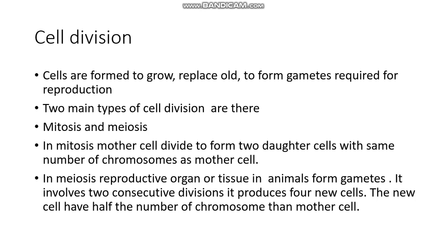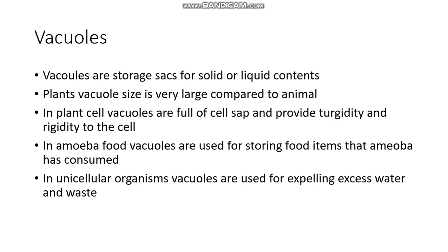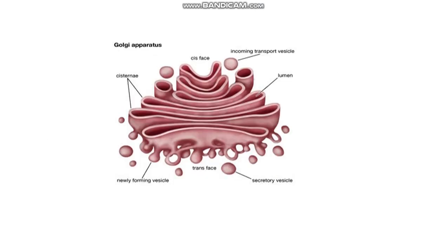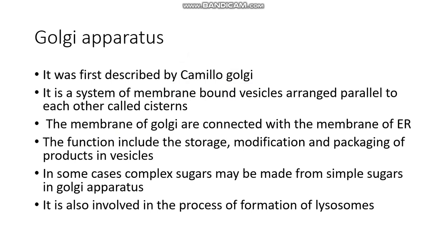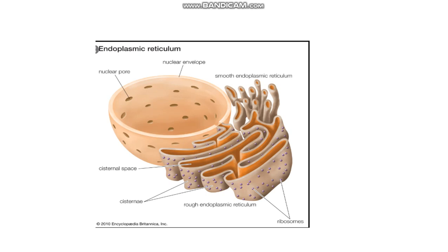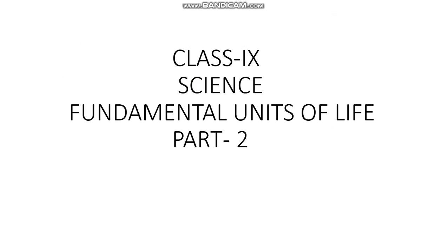That was all about this chapter. We came to know a lot about the cell — why the cell is called the basic unit of life, what the various important cell organelles are and their functions, how the cell works, how it gets energy, and how it transports its products to various parts of the cell. If you have any questions, you can ask your teachers once school reopens.